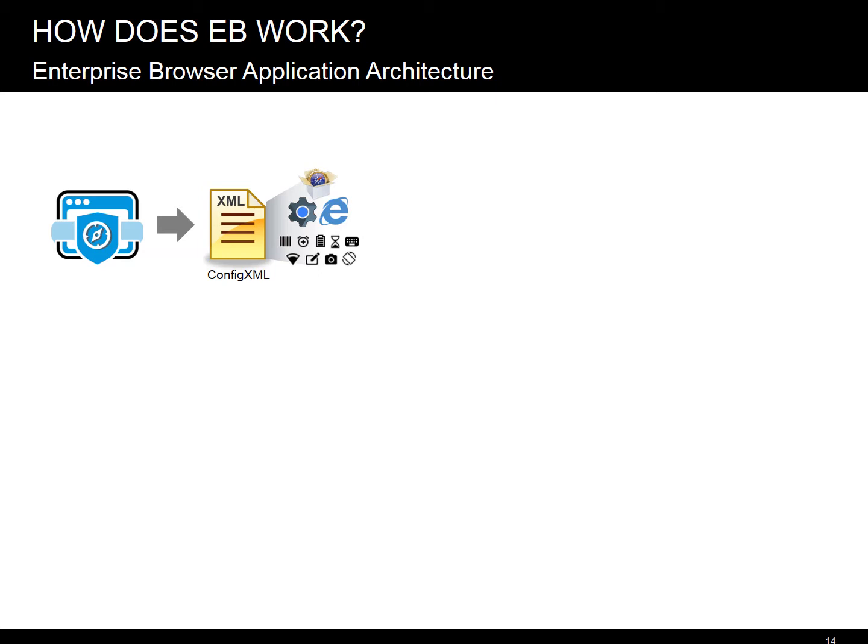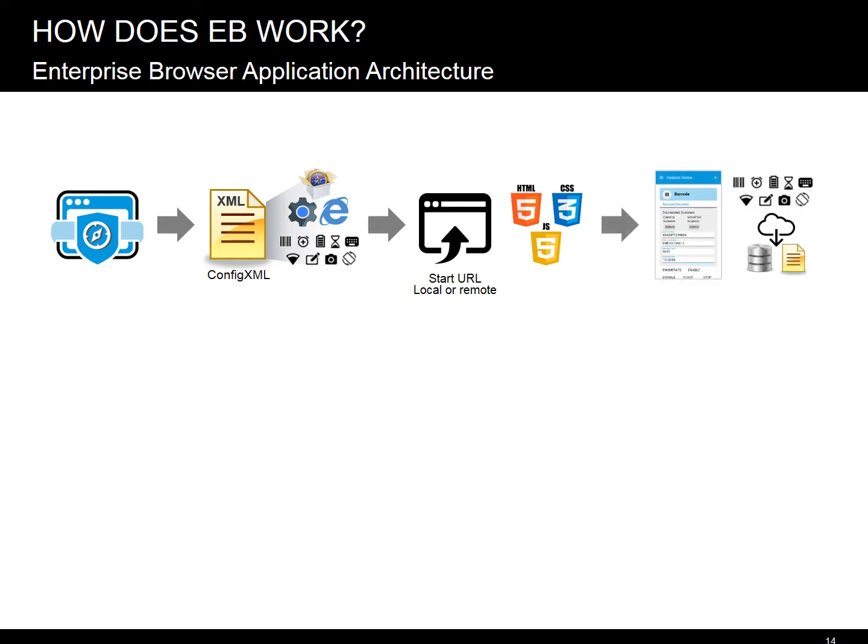The browser initializes. Then EB navigates to the app start URL, i.e., a web page, which is either defined within the config file or explicitly, and loads the app. This can be remote, on a web server, or local — files stored on the device. The app starts and loads a couple of JS libraries that provide access to the advanced features, including additional enterprise APIs, local data storage, push, and many other niceties.